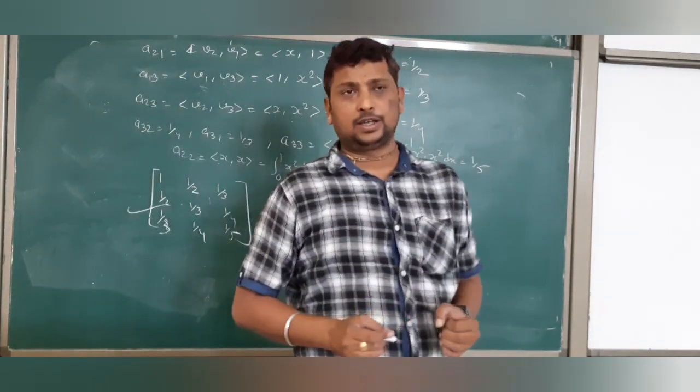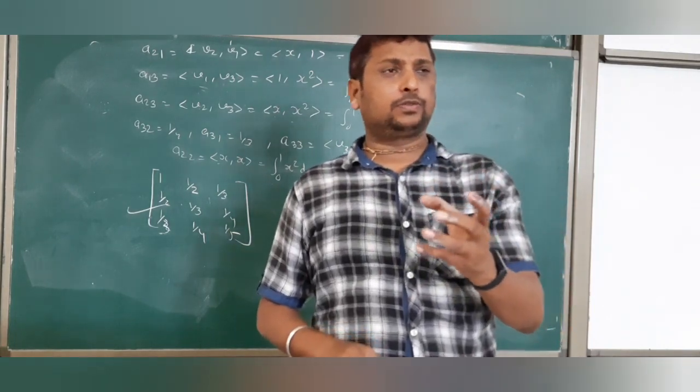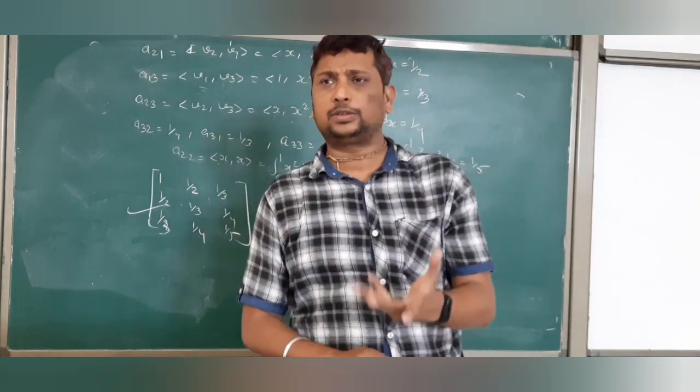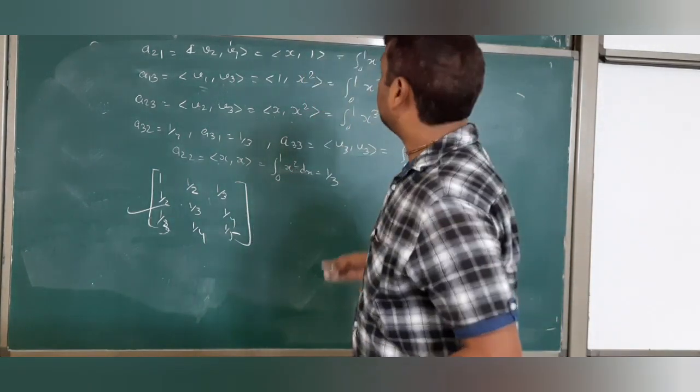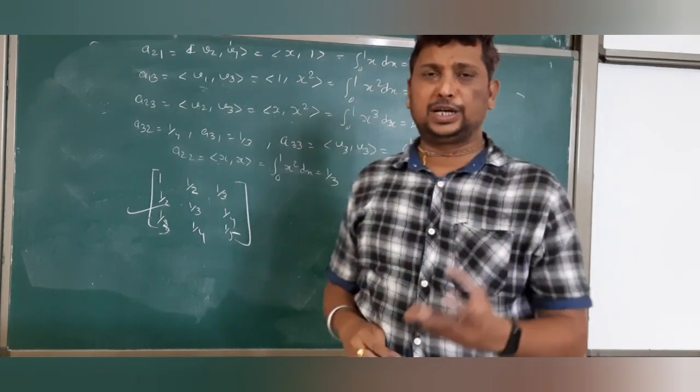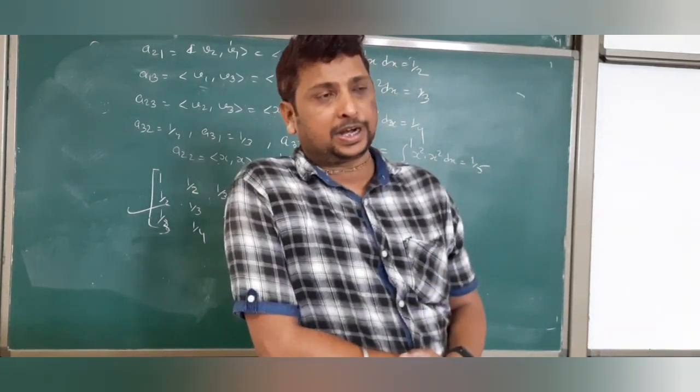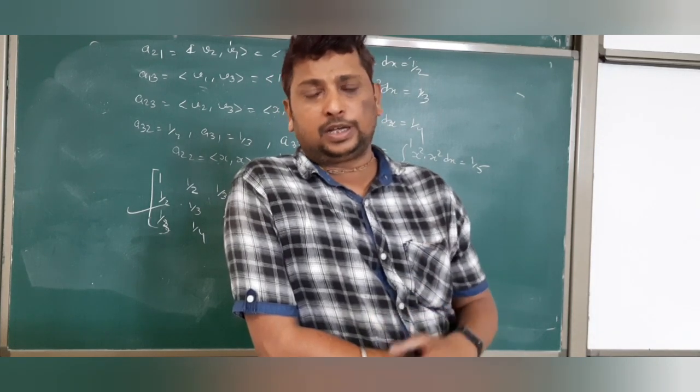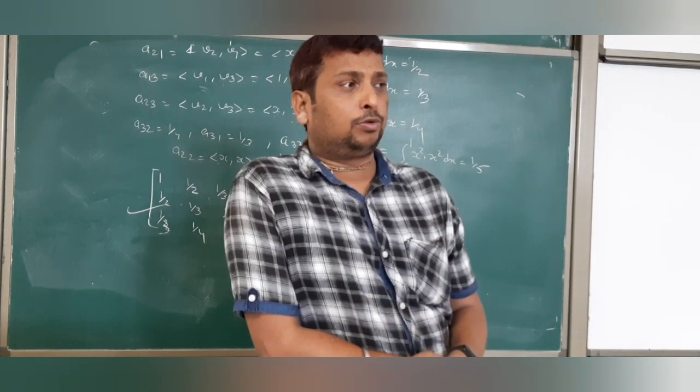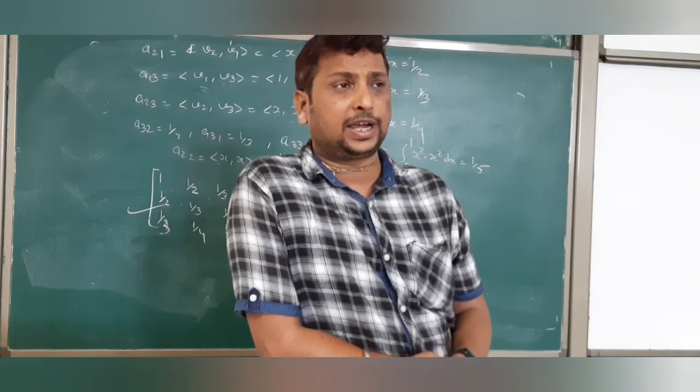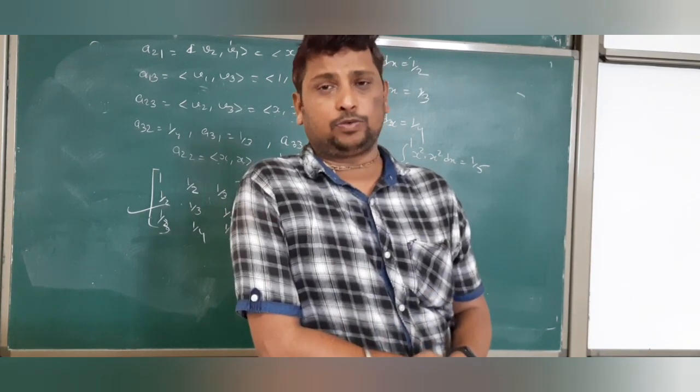So how do you understand? If basis they will give, then just use aij equals inner product vi, vj. So easily you can calculate matrix from a given inner product. Hope you understand this. If you have any doubt, please feel free. Thank you.